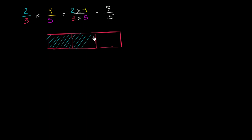And one way to think about this is this is 2 thirds times 4 fifths is 4 fifths of this 2 thirds. So how do we divide this 2 thirds into 5ths? Well, what if we divided each of these sections into 5? So let's do that.